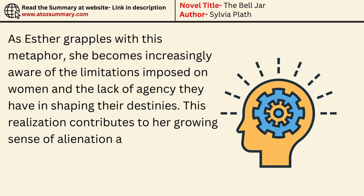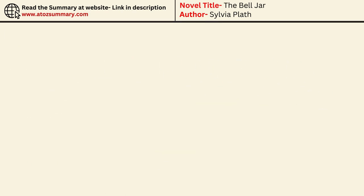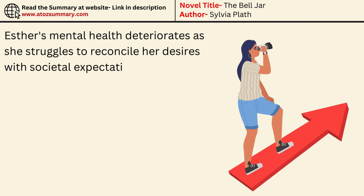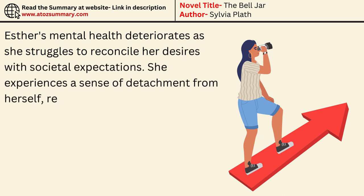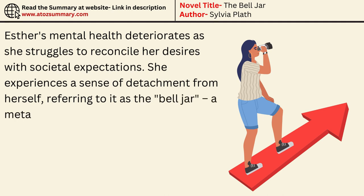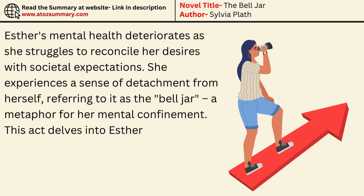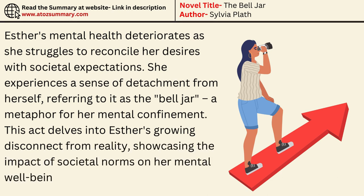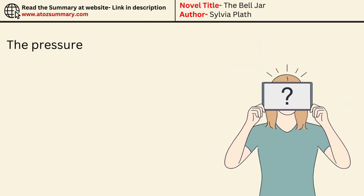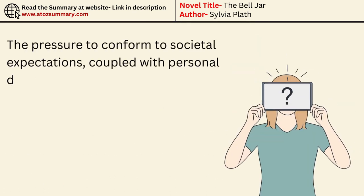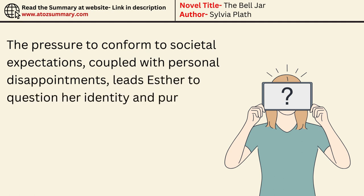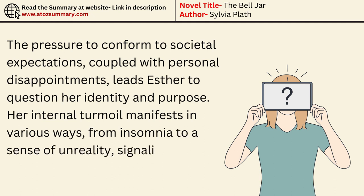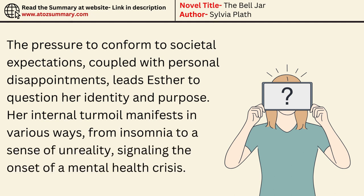This realization contributes to her growing sense of alienation and disillusionment. Esther's mental health deteriorates as she struggles to reconcile her desires with societal expectations. She experiences a sense of detachment from herself, referring to it as the bell jar — a metaphor for her mental confinement. This delves into Esther's growing disconnect from reality, showcasing the impact of societal norms on her mental well-being. The pressure to conform, coupled with personal disappointments, leads Esther to question her identity and purpose. Her internal turmoil manifests in various ways, from insomnia to a sense of unreality, signaling the onset of a mental health crisis.